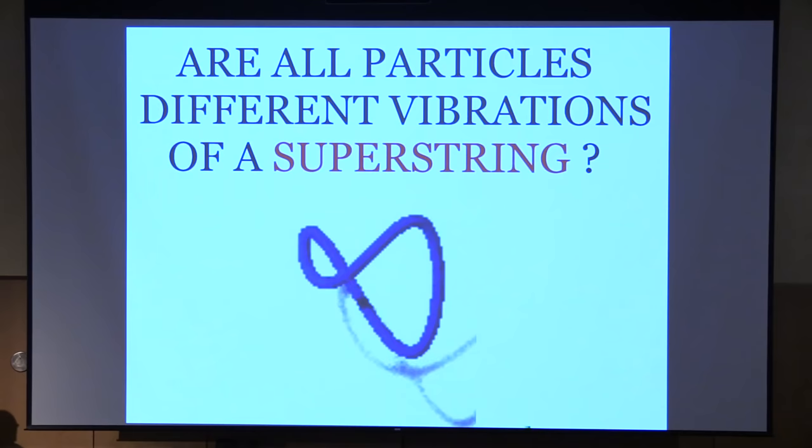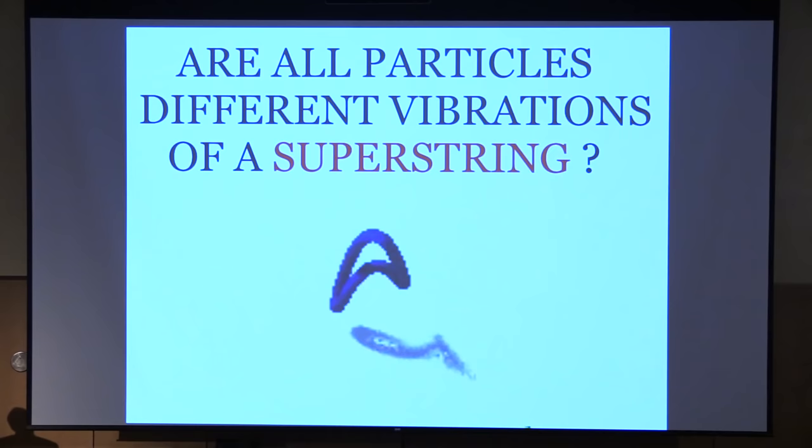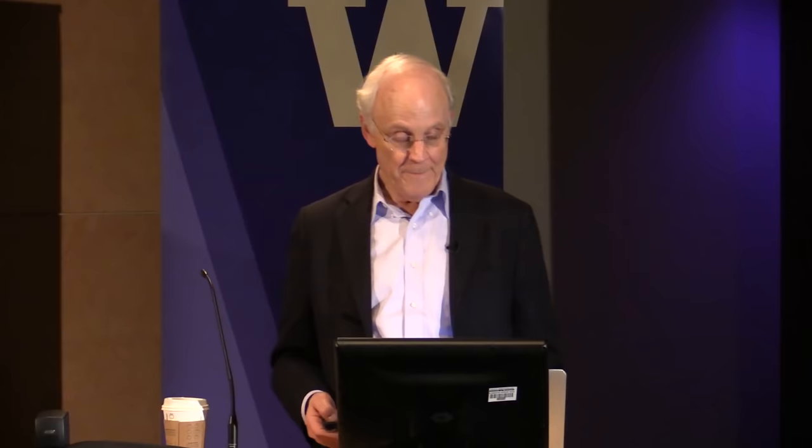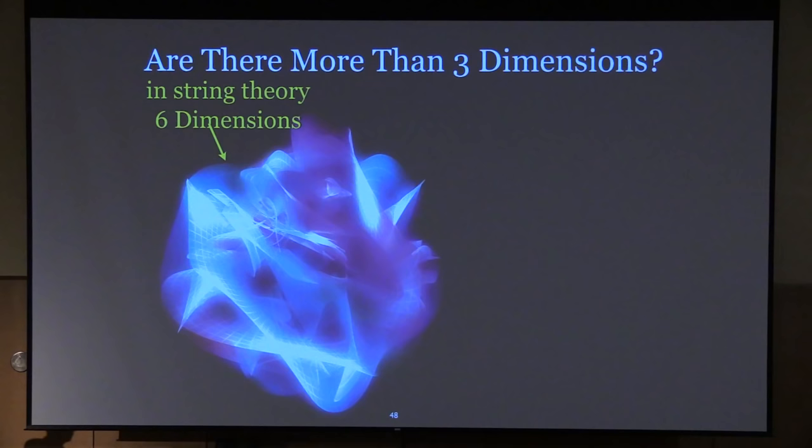String theory originally emerged from people trying to understand the strong nuclear force, which we can understand now as the fact that these flux tubes look like fat strings. So many of the properties of QCD objects are sort of like string properties of fat strings. This is why, where string theory actually came from.